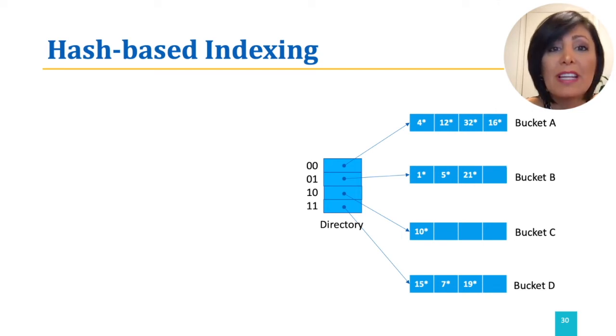To find the bucket for an entry, we apply the hash function, which is a modulo function in the entry. To insert as well, we apply the hash function on the data entry and add it to that bucket. For example, if we want to insert the data entry 13, applying the hash function, it would be directed to bucket B.